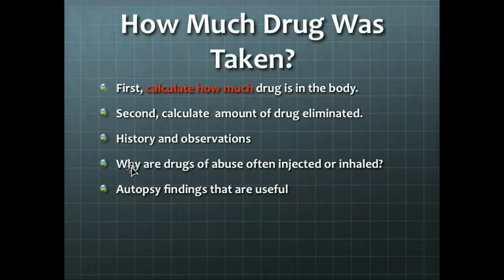How much drug was taken? First, calculate how much drug is in the body at the time of death or at the time of obtaining the sample from the living person. This is calculated from the person's weight in kilograms and the volume of distribution, V sub D. Then calculate the amount of drug eliminated from the body. History and observations will indicate the route of administration and give clues as to the drug's bioavailability. Are there capsules in the GI tract upon autopsy? Is there liquid and food material in the stomach? Can alcohol be detected in the stomach contents? Are barbiturates in the stomach and intestine? Drugs of abuse are often injected or inhaled because of the first pass metabolism effect of the liver causing inactivation.